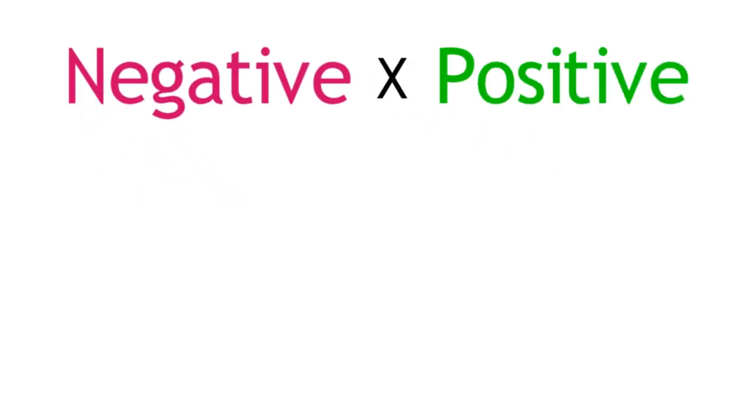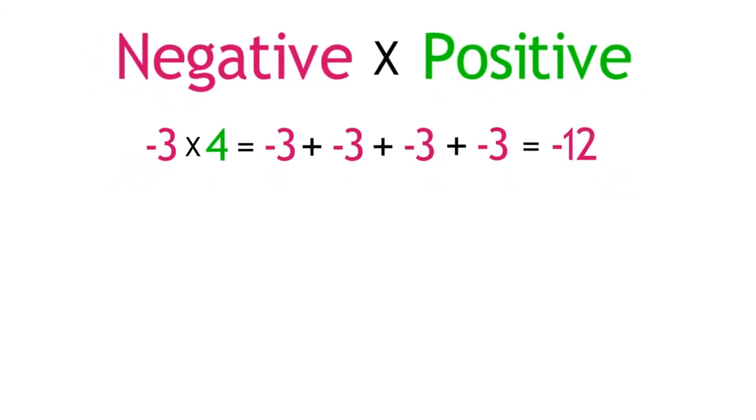And the easiest case is taking a negative number times a positive number. For example, negative 3 times 4. All this means is take negative 3 and add it to itself 4 times. Negative 3 plus negative 3 plus negative 3 plus negative 3. And we know that this equals negative 12. And that should feel pretty comfortable. Because as I said earlier, adding negative numbers usually isn't confusing. The idea of adding amounts of money that I owe and thinking of a negative number as an accumulating debt.